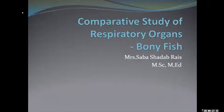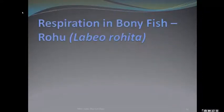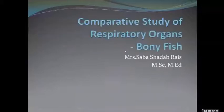Let us discuss a little about the gills. Gills are basically of two types: hemibranch and holobranch. The hemibranch type possesses only a single layer of lamellae — they have only one side of the gill present. But when we talk about the holobranch gills, you will find that the lamellae are present on both sides.